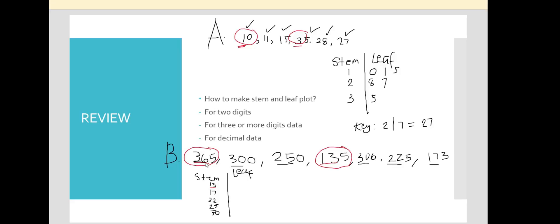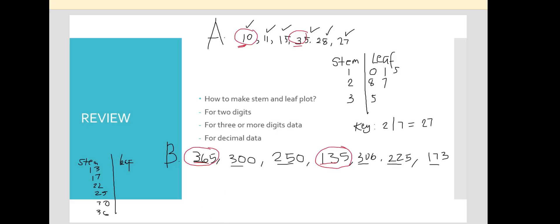After 30, the last stem is 36. So we have: 13, 17, 22, 25, 30, and 36. Now we input all the data. Looking back at our values: 365 goes to stem 36, leaf 5. 300 goes to stem 30, leaf 0. 250 goes to stem 25, leaf 0. 135 goes to stem 13, leaf 5.